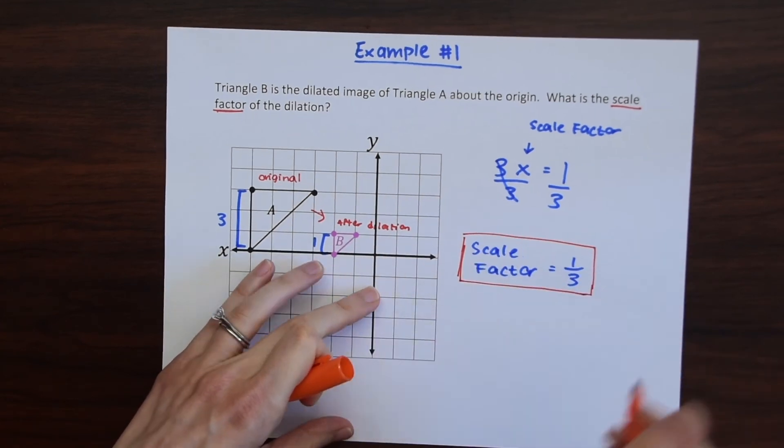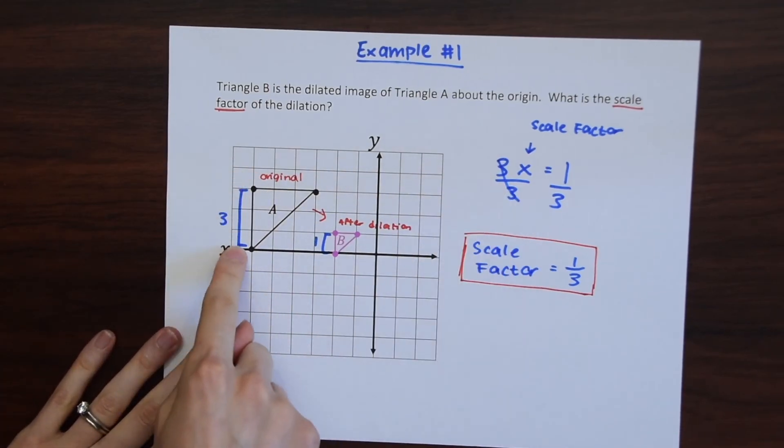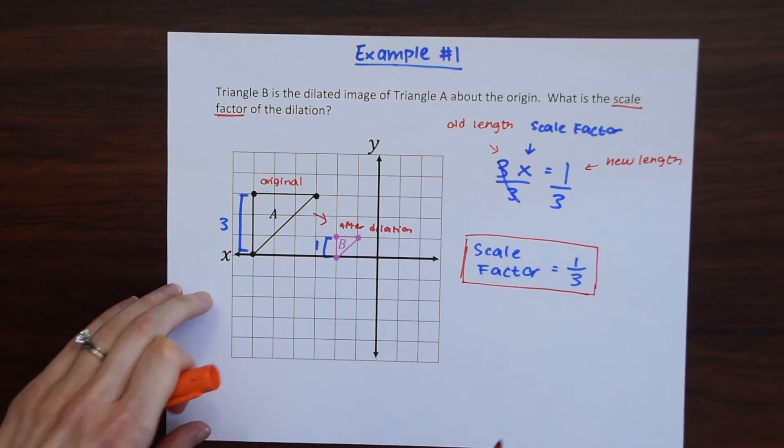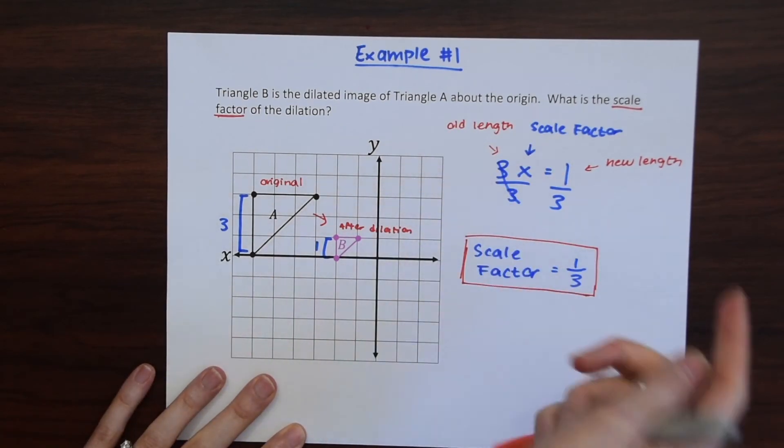So super easy, just asking yourself these questions: what did I multiply times the original length to get the new length? I'll just spell out what each of these stand for. So this is the old length, this is a scale factor that we didn't know but we know it now, and then this is our new length.